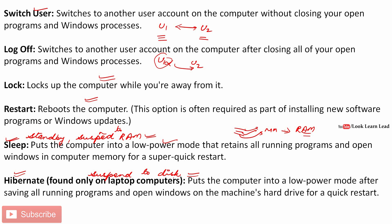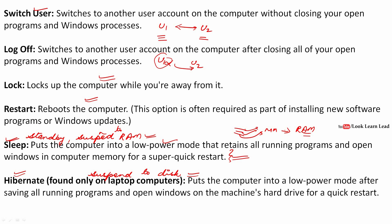In hibernate, power consumed is much less than in sleep. However, sleep offers a super quick restart — it restarts instantaneously because programs are in RAM. Hibernate takes more time because data is stored on the hard drive. For example, if you want to resume after 5-10 minutes, use sleep. If you need to resume after an hour or more, use hibernate.